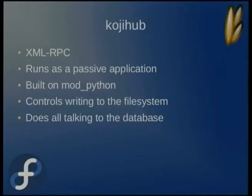Koji Hub uses XML-RPC for all of its communications. It's a passive application — by itself, if you set up Koji Hub, it's not going to do anything. It runs as a WSGI Python app and is not active in any way, shape, or form. It's entirely passive.